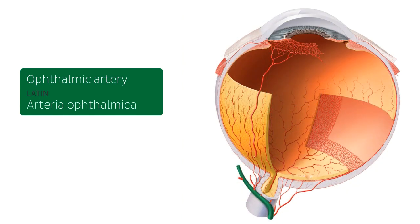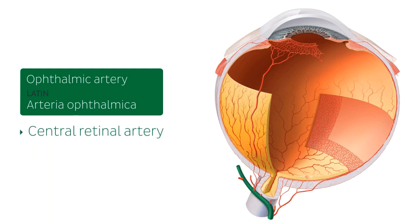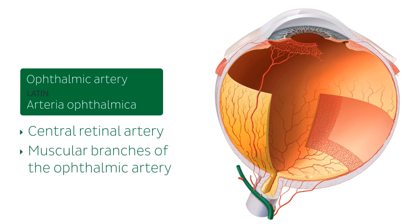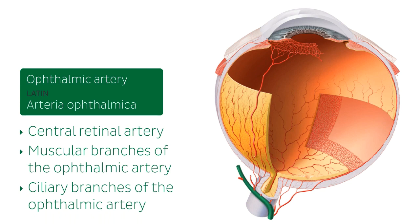The branches of the ophthalmic artery are grouped into orbital branches and ocular branches. In this tutorial, we will only focus on the ocular branches. The ocular branches can be grouped into three categories: the central retinal artery, the muscular branches of the ophthalmic artery, and finally the ciliary branches of the ophthalmic artery.